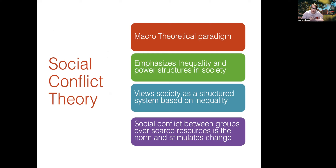Now let's talk about social conflict theory. If you're a fan of Marx, you may know that name — he was one of the main contributors. It's a macro theoretical perspective, meaning it doesn't concern itself with small issues between two groups; it cares about the outcome for all groups. It emphasizes inequality and power structures in society — bourgeoisie and proletariat. Society is viewed as a structured system based on inequality, where the powerful do not allow the less powerful to have anything. Social conflict between groups over scarce resources is the norm that stimulates change.